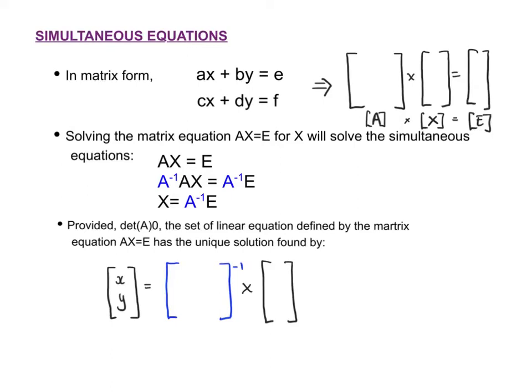Today we're doing simultaneous equations — that's when we have two equations and we want to solve for the unknowns. Normally we have X and Y as our unknowns, and when you have simultaneous equations there are two unknowns you want to solve for. It might come up in questions like someone went to the shop and bought two pies and two drinks and it cost a certain amount.